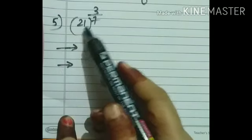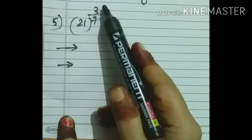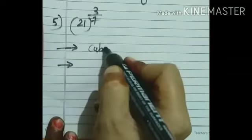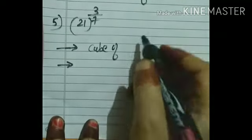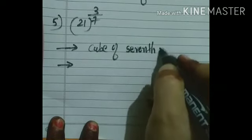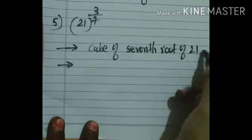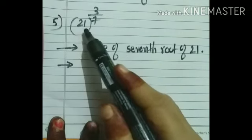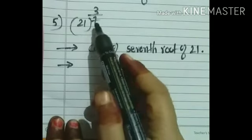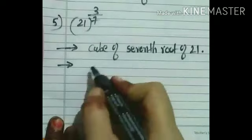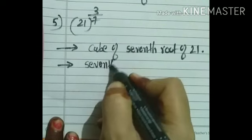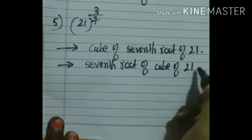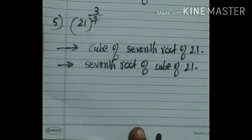Now the fifth one: 21 raised to 3 upon 7. Here 3 is the power and 7 is the root. So the first meaning: cube of the 7th root of 21. The second meaning, starting from the root as denominator: seventh root of the cube of 21. This way we write it. Question Number 1 is completed.